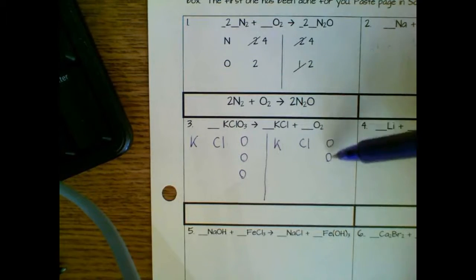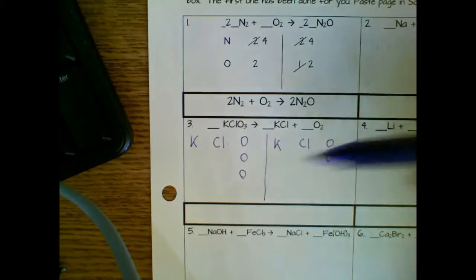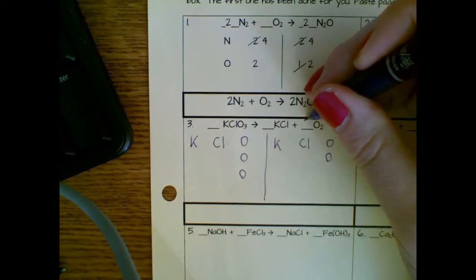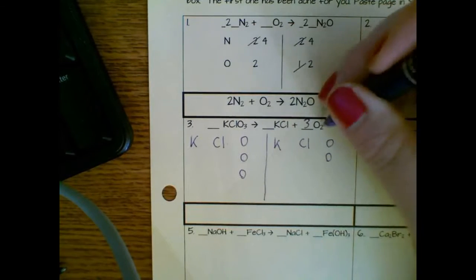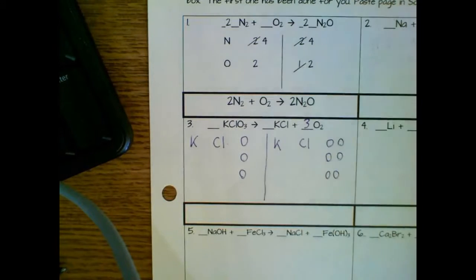If I have a situation where I have two on one side and three on the other, I like to go for the nearest common multiple, which is going to be six, two times three. So if I wanted six O's over here, I would just need to write in a three and now three times two is six. So there we go.